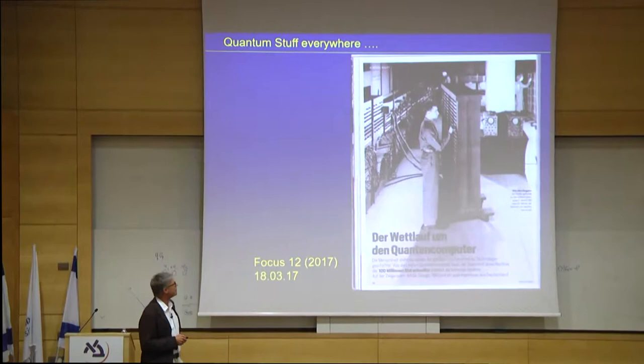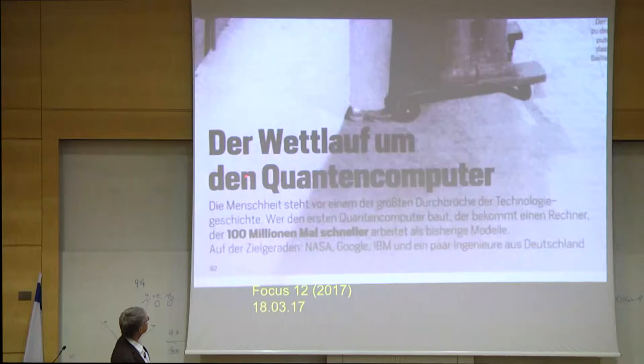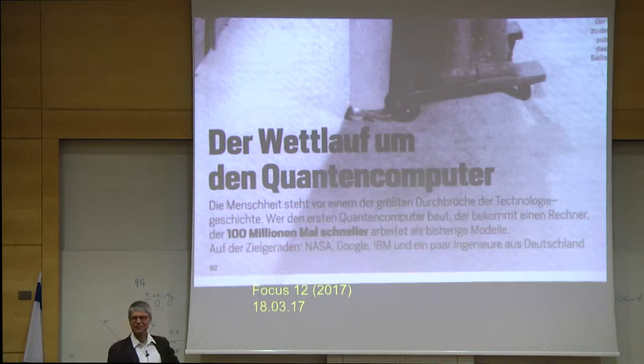Let me begin with an article that appeared in a German weekly magazine recently. This is obviously from the old ENIAC machine in Harvard. It says, the competition for the quantum computer. Humanity is facing one of the biggest breakthroughs in the history of technology. Whoever builds the first quantum computer will get a computer which is 100 million times faster than everything else so far. And on the home stretch, there are NASA, Google, IBM, and a few engineers from Germany.